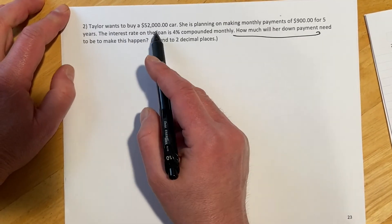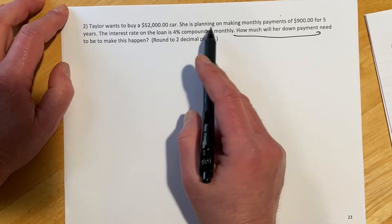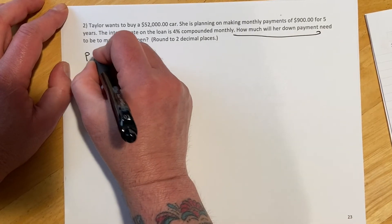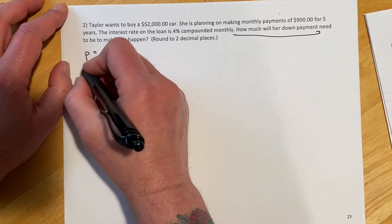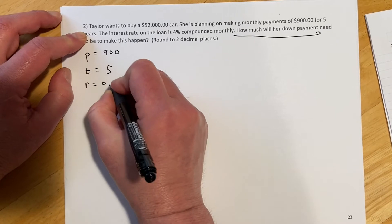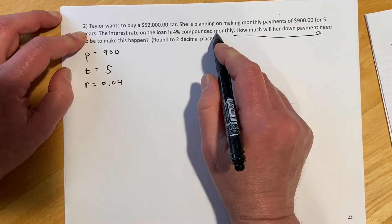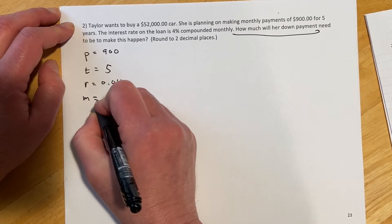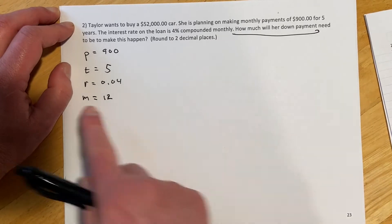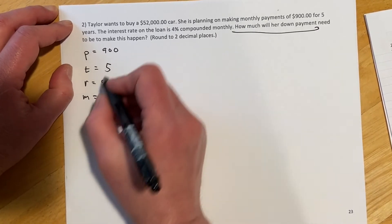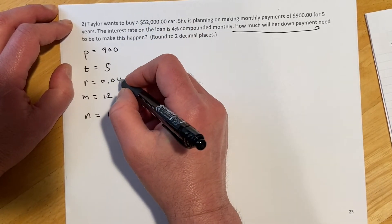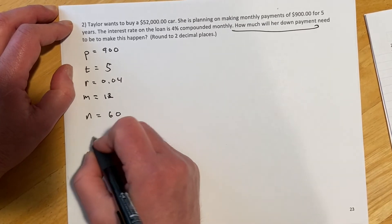Okay, so this one goes, Taylor wants to buy a car for $52,000. She's planning on making monthly payments of $900. So we know her payments are going to be $900 a month for five years. So that's going to be T. Interest rate is 4%. And then compounded monthly. So M is 12. And so then our calculated quantities are going to be 12 times five. So that would be our N is 60. And then 0.04 divided by 12. So that's going to be our I.